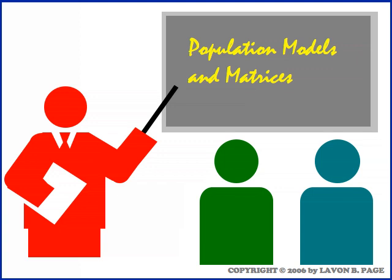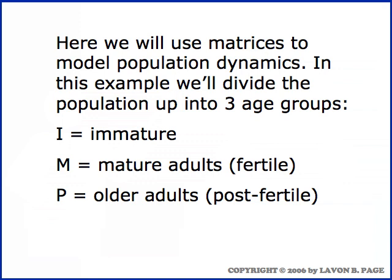In this video we're going to use matrices to study population dynamics — that is, how populations change over time. Suppose we have some kind of animal population and we're going to break it up into three groups: I represents the immature animals which are too young for breeding, M is the mature adults who are fertile, and P is the older adults in a post-fertile period.